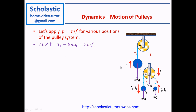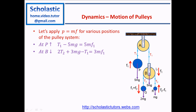Applying F = ma to moving pulley B in the downward direction: there are four forces acting on it — two tensions T2 (one on each side of the string over B), the weight 3mg downward, and T1 upward. So: 2T2 + 3mg − T1 = 3m × F1, where F1 is the acceleration of pulley B downward.